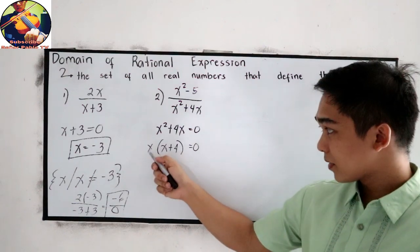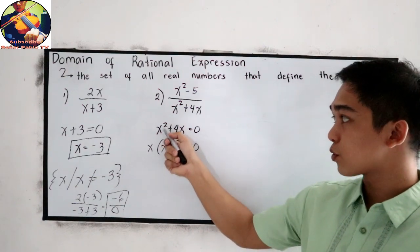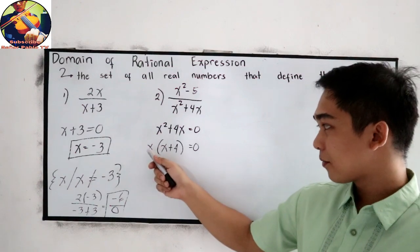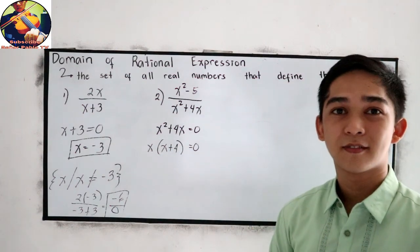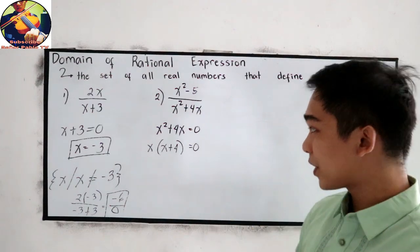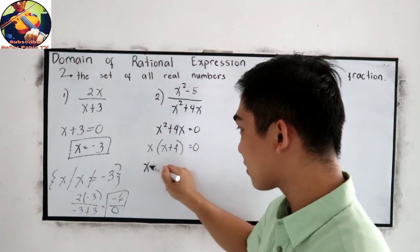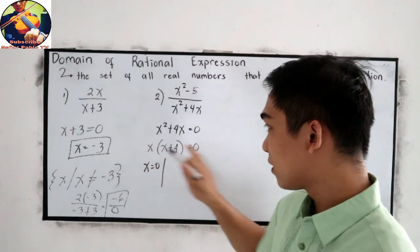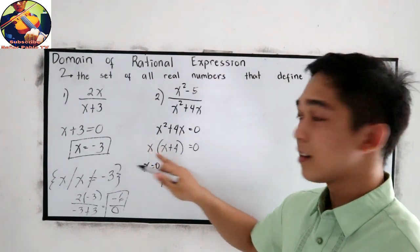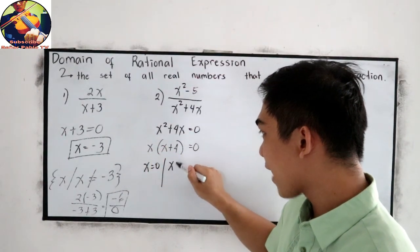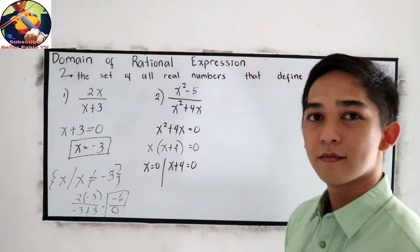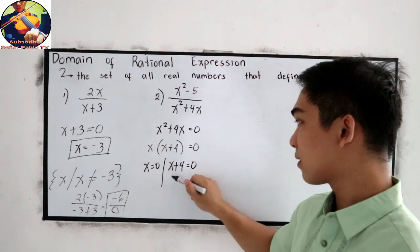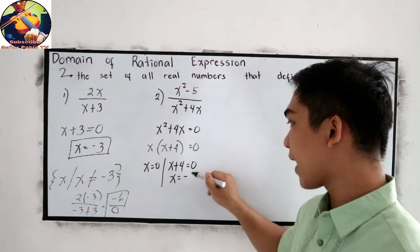Let us check. x times x is x squared. x times positive 4 is positive 4x. Now, equate to 0. So this will become x is equal to 0. And the other factor is x plus 4 is equal to 0. So solve for x, x is equal to negative 4.